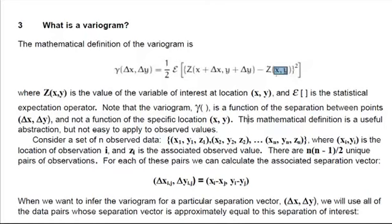So let's see what they say about this. The mathematical definition of the variogram is that where z of x, y is the value of the variable of interest at location x, y. So z of x, y in our case is height. That's the variable of interest. And e is the statistical expectation operator. Note that the variogram gamma is a function of the separation between points delta x, delta y, and not a function of the specific location. So we do this over all points x, y, but we specify a specific kind of distance, delta x and delta y.